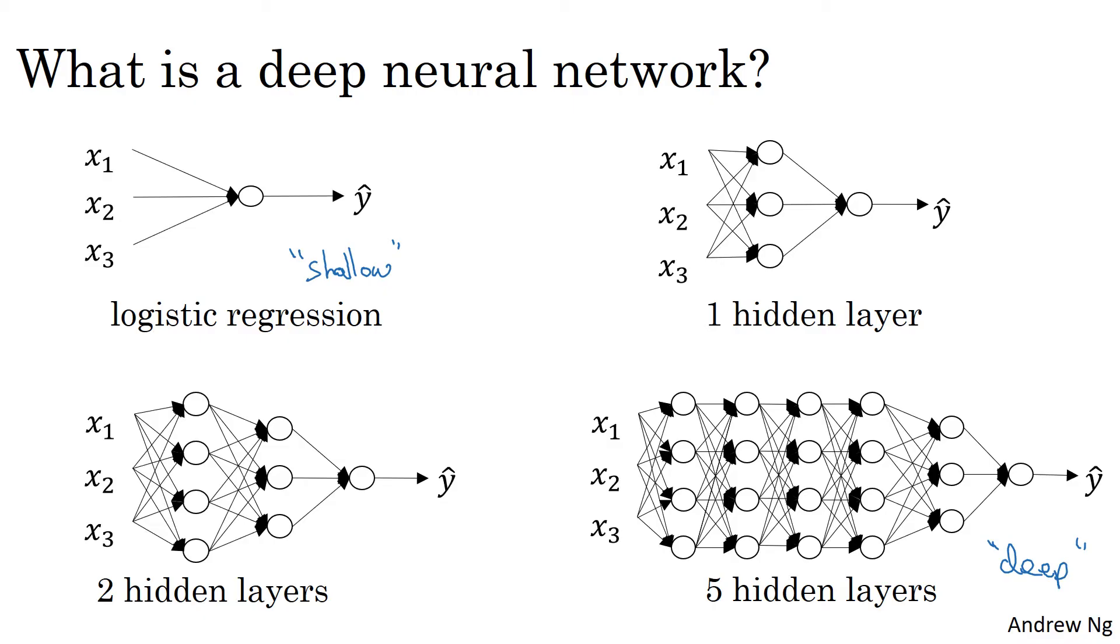So a neural network with a single hidden layer, this would be a two-layer neural network. Remember, when we count layers in a neural network, we don't count the input layer. We just count the hidden layers as well as the output layer. So this would be a two-layer neural network, which is still quite shallow but not as shallow as logistic regression. Technically, logistic regression is a one-layer neural network.